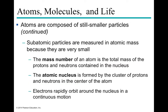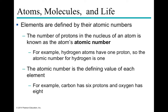The mass number of an atom is the total of the number of protons and neutrons in the nucleus. Electrons are not factored into the mass number because they carry such a small atomic weight. The number of protons in the nucleus is known as the atomic number — hydrogen has one proton, giving it an atomic number of one. The atomic number is the defining value of each element: carbon has six protons, oxygen has eight.